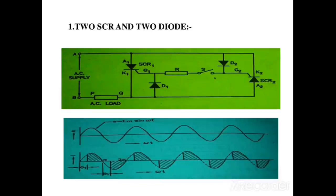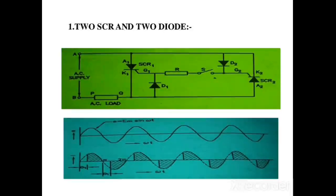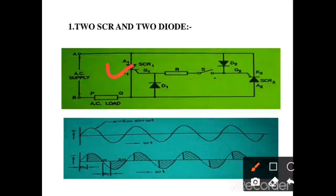This is the circuit diagram of the first method, which uses 2 SCRs and 2 Diodes. You can see in the circuit diagram that there are 2 SCRs and 2 Diodes used in this circuit. This is SCR1 and SCR2, and this is Diode D1 and Diode D2.